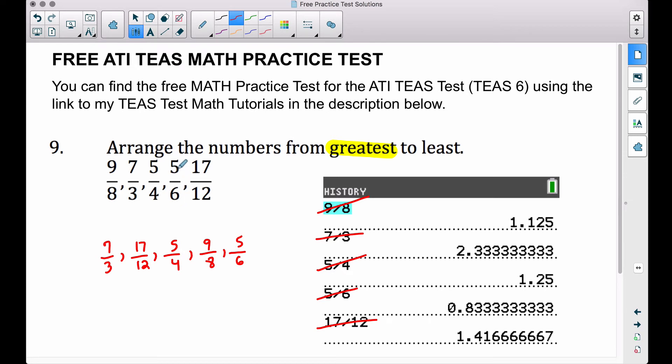So all of those fractions are guaranteed to be bigger than one, whereas the 5/6, that fraction is not improper. This fraction here, 5/6, when your numerator is smaller than your denominator, that fraction is guaranteed to be less than one. So there's our solution.